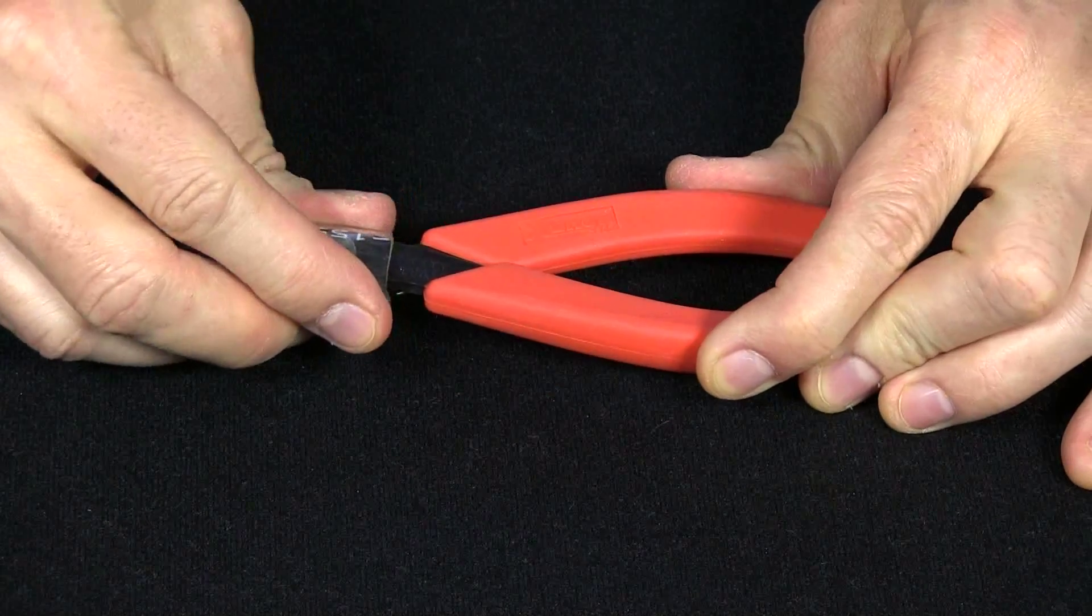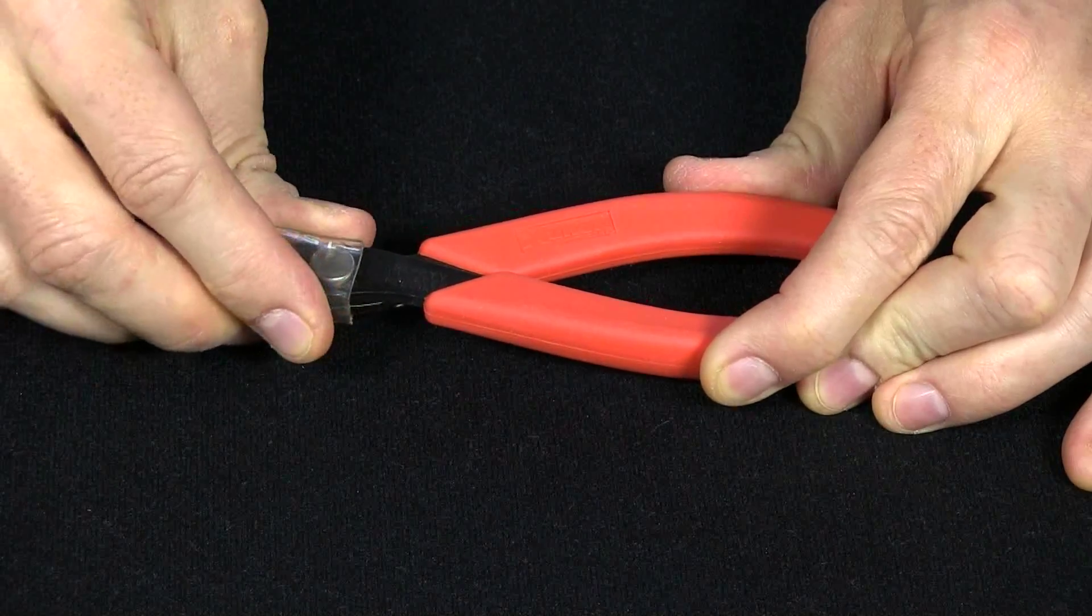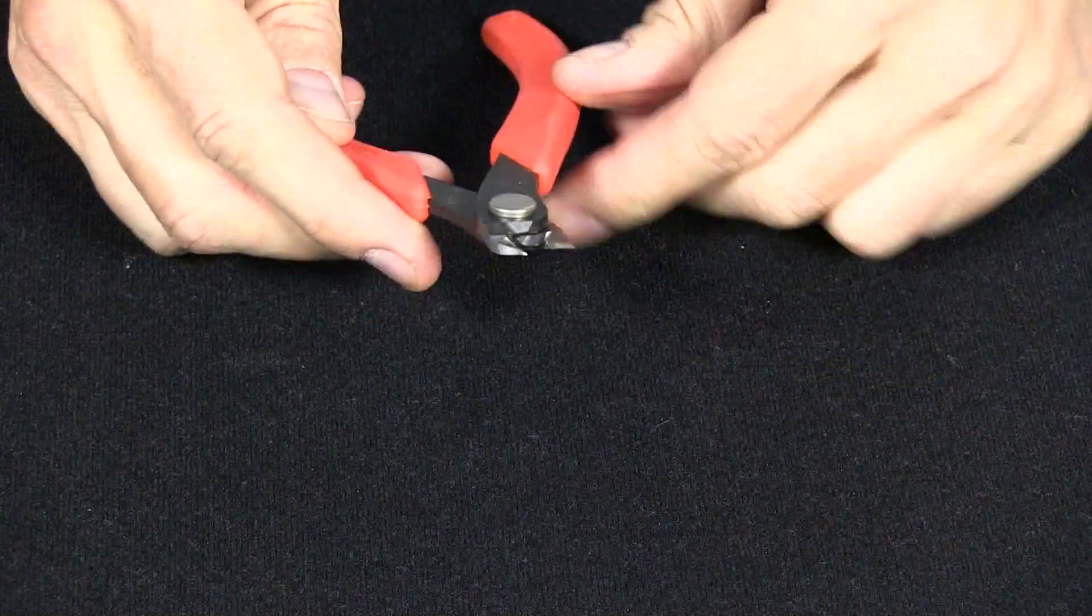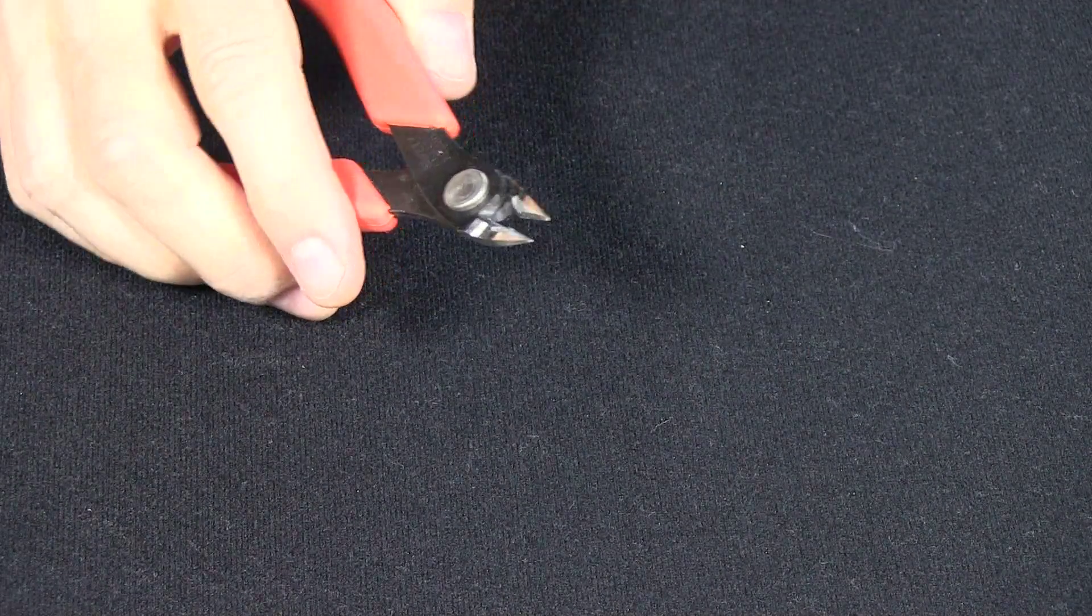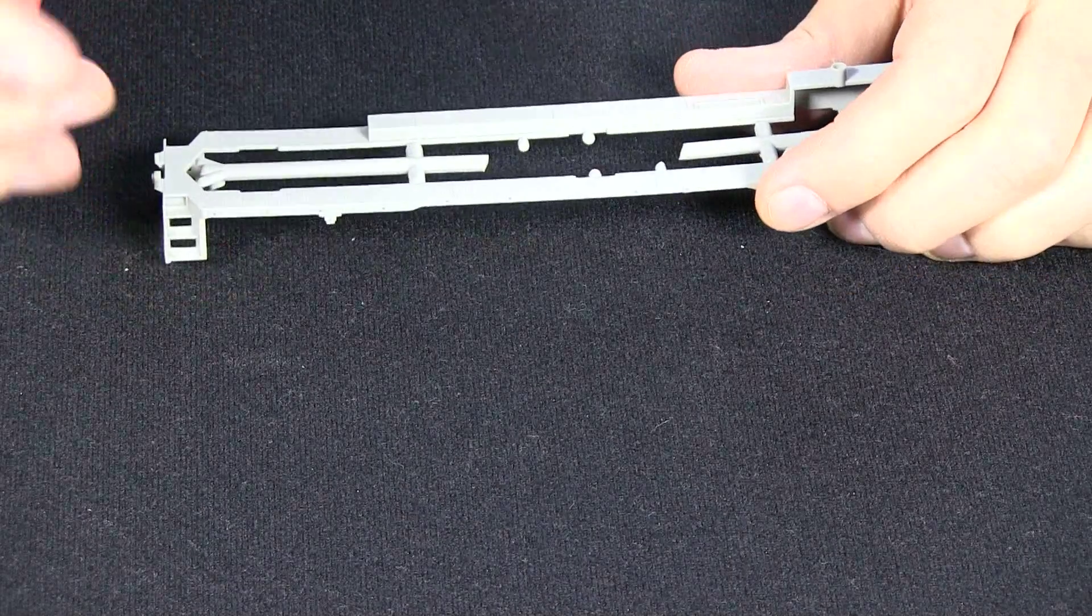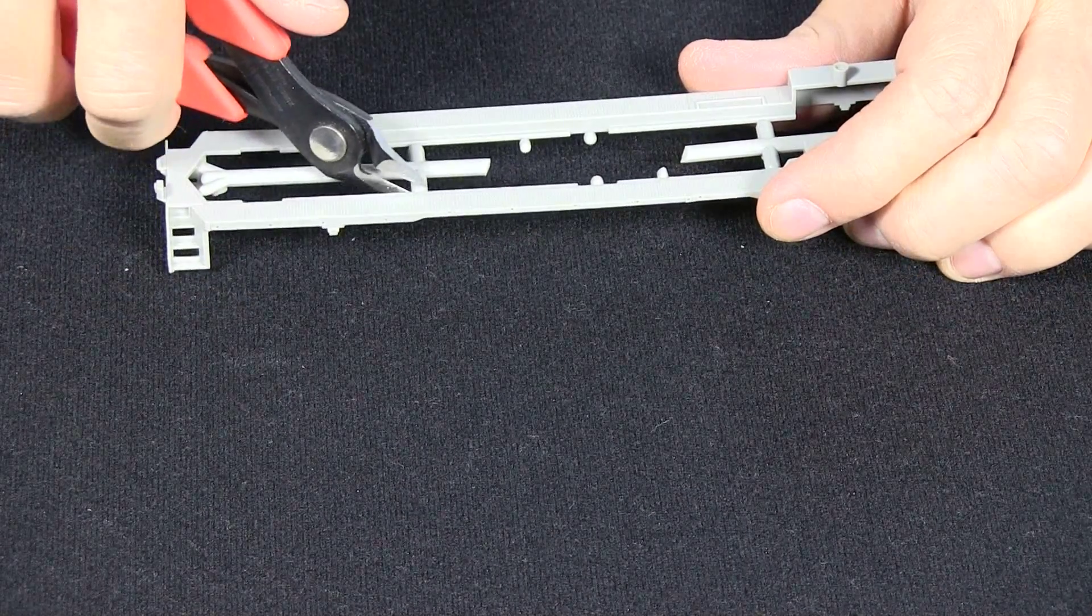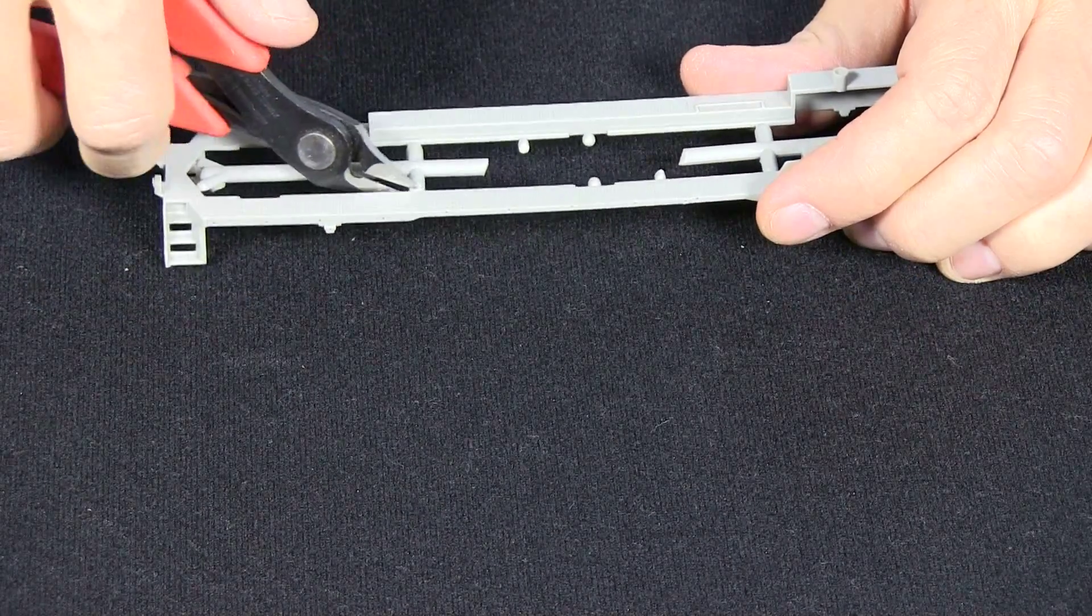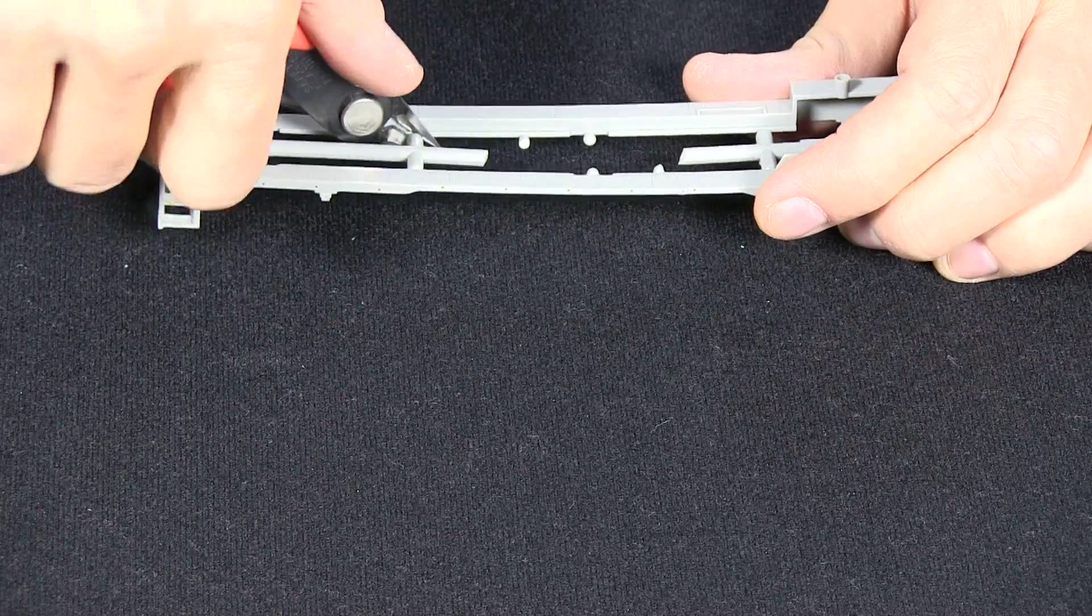This comes with this little piece of tubing to protect the end and basically they're just for when you have a piece of a model like this you can just use them to cut the sprue off.